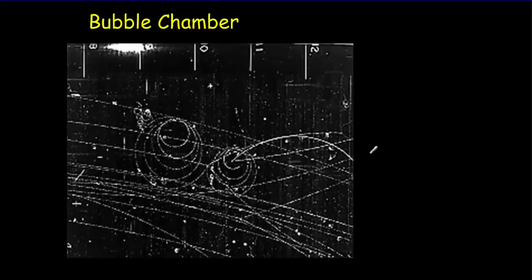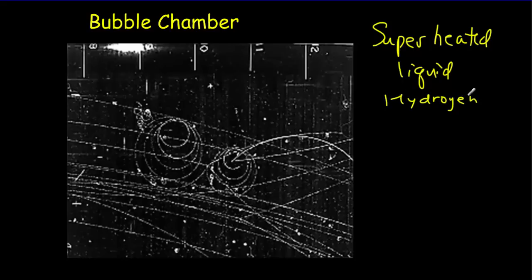All of these other particles began to be discovered when the bubble chamber was invented. The bubble chamber simply consists of superheated liquid. Generally, that liquid is going to be hydrogen. When it's superheated, that means it's above the boiling temperature, but it's not boiling.